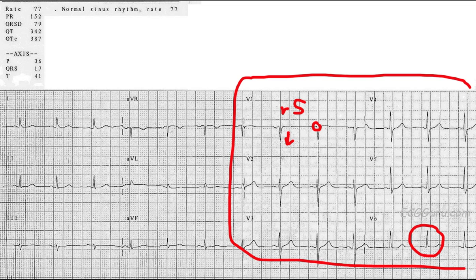What's normal is that we should see a progression from negative to positive as we go across the V leads, which are placed pretty symmetrically across the chest. The R wave should gradually get more prominent and the S wave gradually less prominent. By V3 or V4, we usually see about a half-and-half distribution of R to S. By V5, we've almost lost the S wave, and by V6, we've lost it. That is called R wave progression, and that's normal.